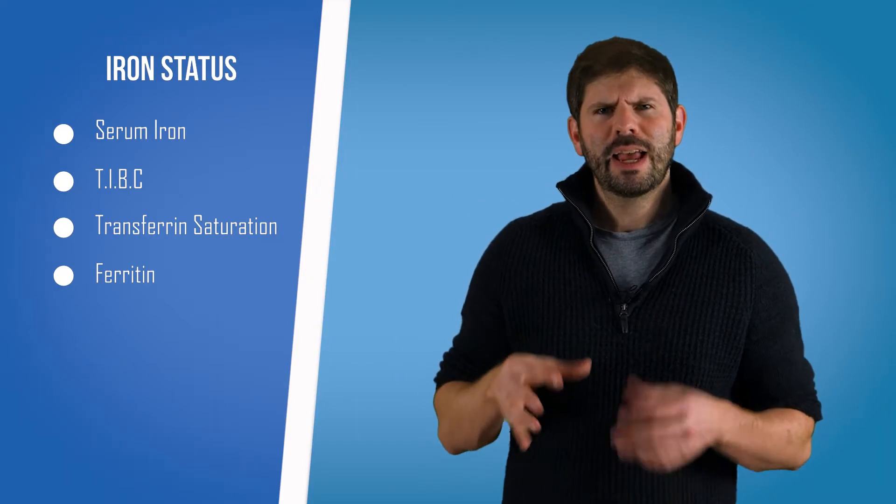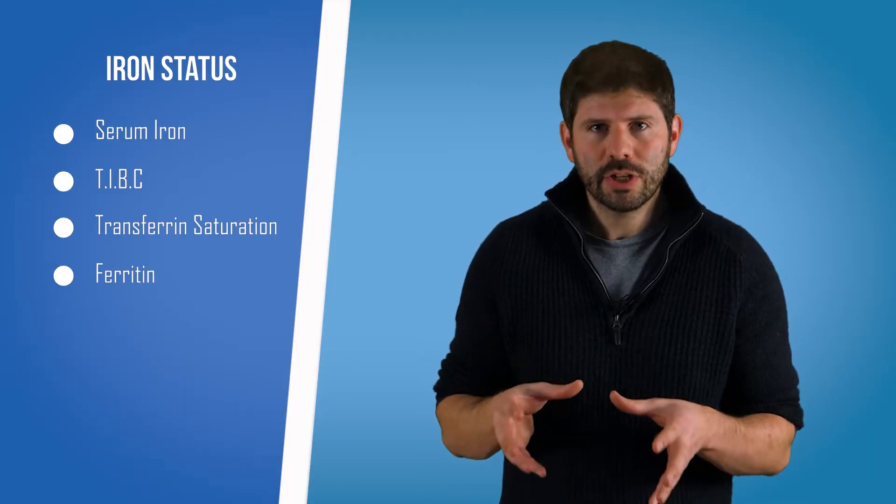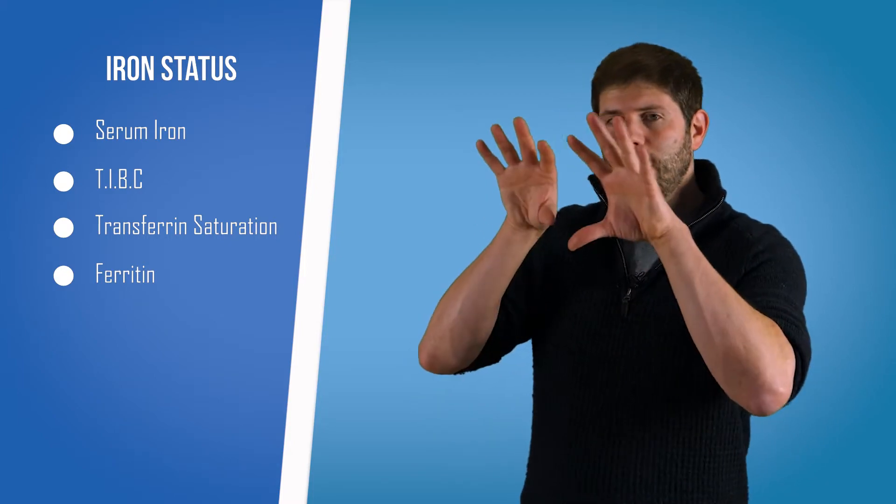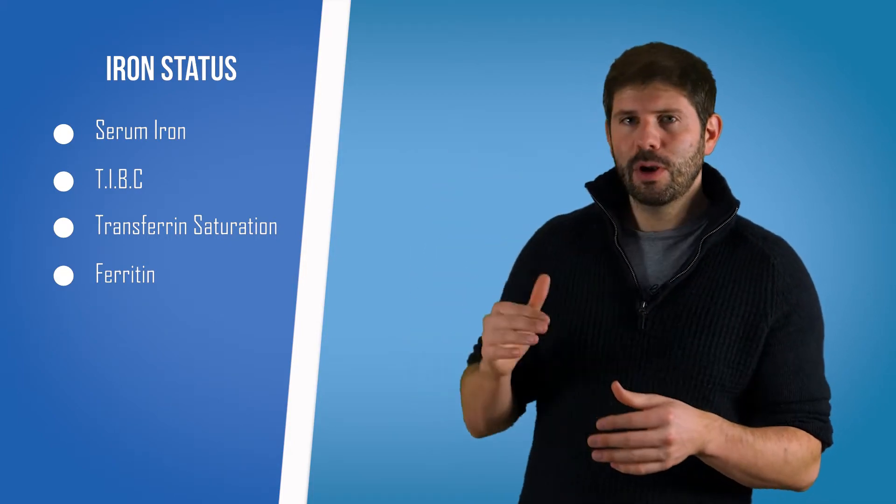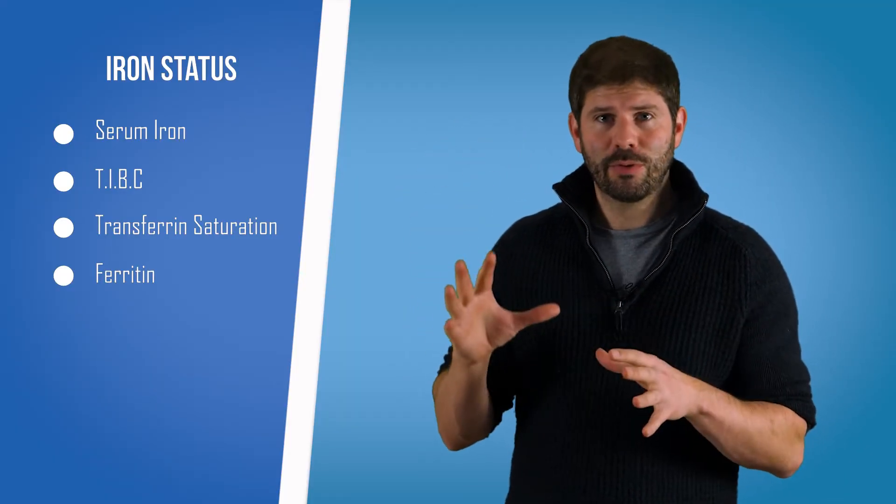Finally, we have ferritin, and ferritin is the general measure of iron stores. It's looking at how much of that broken down iron you have in your body. Now putting all these together and putting them alongside each other lets us see what kind of picture we're getting for you.